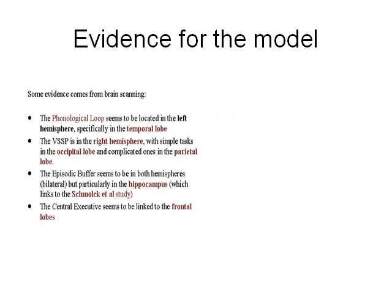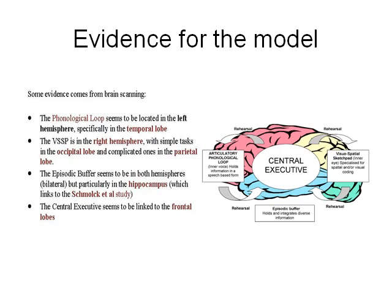There's also some evidence from brain imaging techniques which seems to suggest that the phonological loop is in the left hemisphere, the visuospatial sketchpad is in the right hemisphere, and the central executive is in the frontal lobes, just above your eyebrows. You'll also notice the episodic buffer — we'll come onto that.